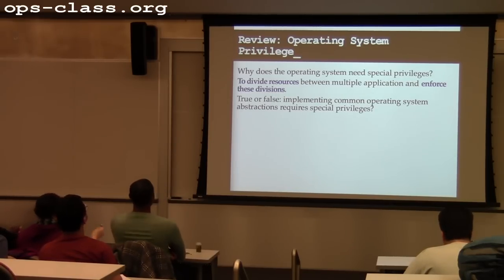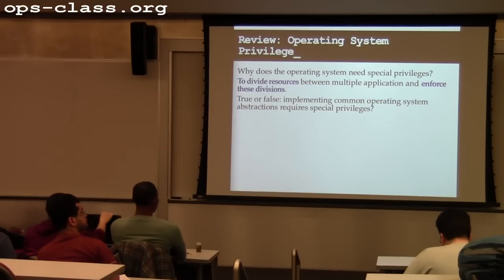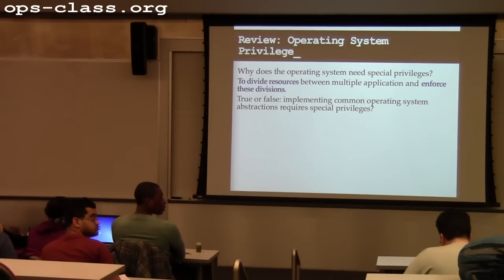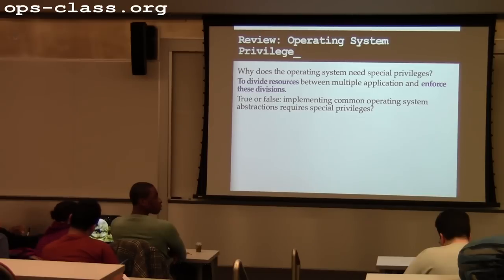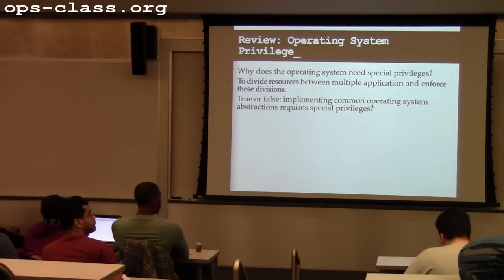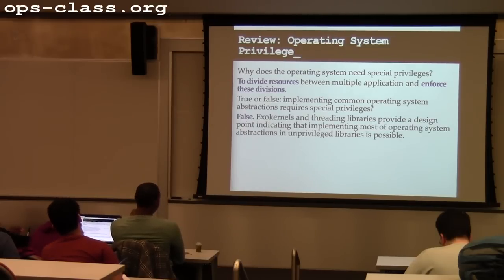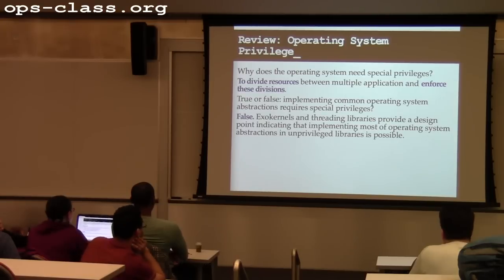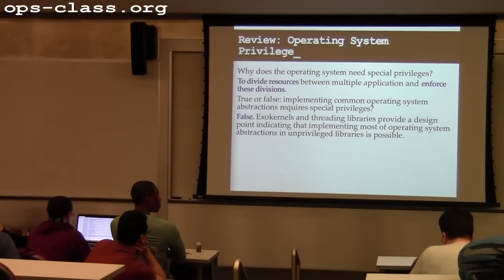True or false: implementing common operating system abstractions requires special privileges. False — implementing them doesn't require special privileges. A counter-example is libraries and threading libraries. There's also a design pattern called exokernels, where many abstractions are implemented in libraries. The kernel is boiled down to just the tiniest bit of what it needs to be — usually just enforcing resource divisions and dividing resources — rather than providing those abstractions directly.